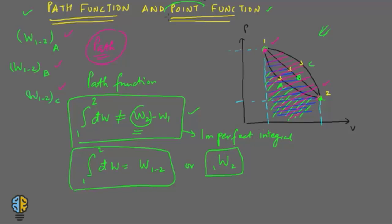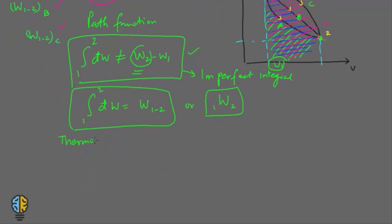Now let's discuss point functions. Thermodynamic properties have a definite value at a particular state. For example, at state 1, the property of pressure would have a value P1, and the property volume would have a value V1. So a property depends upon the point and not on the path that the system undertakes. Therefore, thermodynamic properties like pressure, volume, and temperature are point functions.